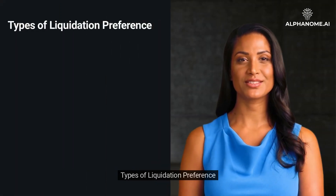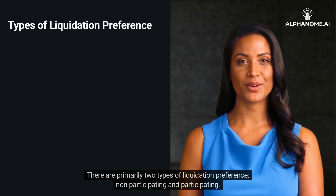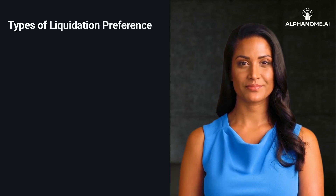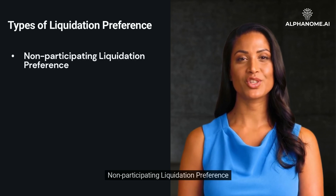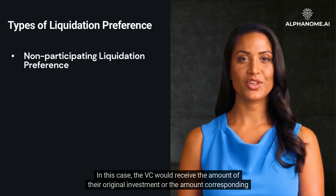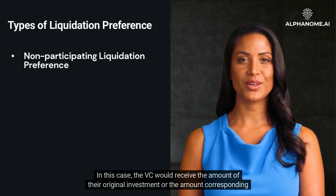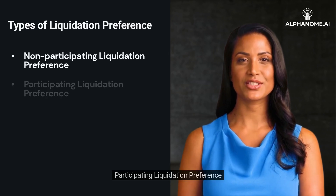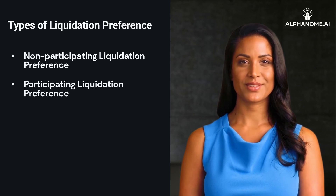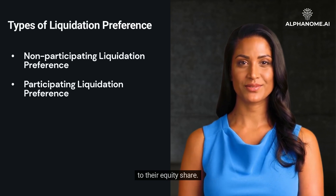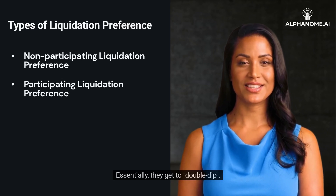Types of Liquidation Preference. There are primarily two types of liquidation preference: non-participating and participating. In non-participating liquidation preference, the VC would receive the amount of their original investment or the amount corresponding to their equity share, whichever is higher. In participating liquidation preference, the VC gets their original investment back, plus a share of any remaining proceeds corresponding to their equity share. Essentially, they get to double-dip.